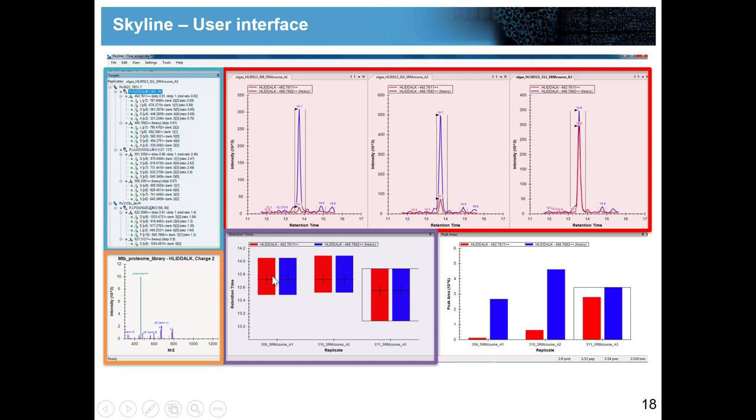This is the retention time replicate comparison. You see here on the y-axis the retention time and on the x-axis the three different samples. You can always see the start and the stop, so the two boundaries where Skyline picked a peak. These are the two dashed lines up and down, the black line is the peak apex that you see. You can see that I have the same boundaries for light and heavy in the three different samples but I have slightly different retention times, but still very similar.